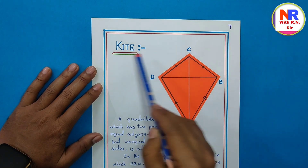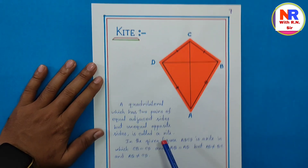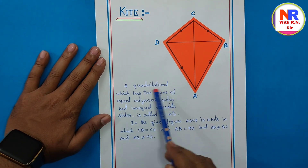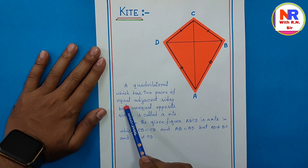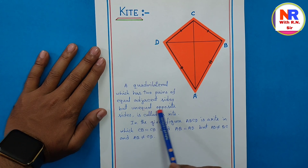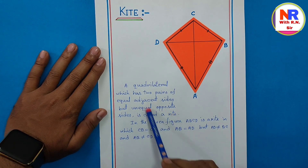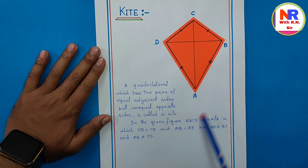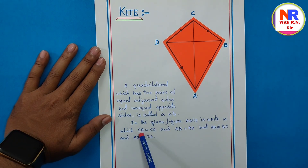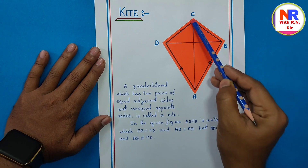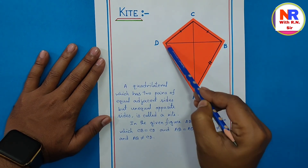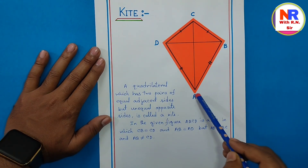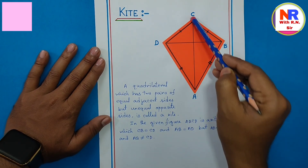Page number 7 — kite. A quadrilateral which has two pairs of equal adjacent sides but unequal opposite sides is called a kite. In the figure, ABCD is a kite in which BC = CD and AB = AD, but AB ≠ CD and AD ≠ BC.